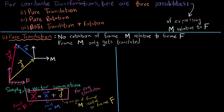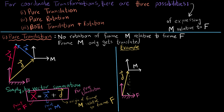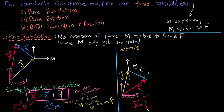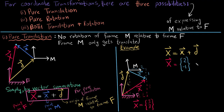Let's solidify our understanding by using an example. I draw out the fixed frame in pink and the moving frame in white. The coordinates of the origin of the moving frame are 1 unit in X and 4 units in Y with respect to the fixed frame — this is the same as the d vector. Small x, the coordinates of the point with respect to the moving frame, is 2 units in positive X and 1 unit in negative Y. I need to find big X with respect to the fixed frame. By looking at the diagram, big X is 3 units in positive X and 3 units in positive Y. Using the formula big X equals small x plus d gives the same result, hence verifying our formula is correct.